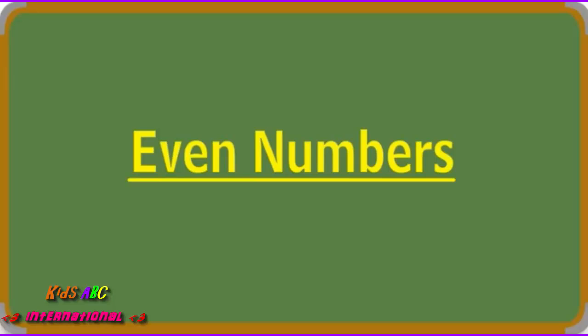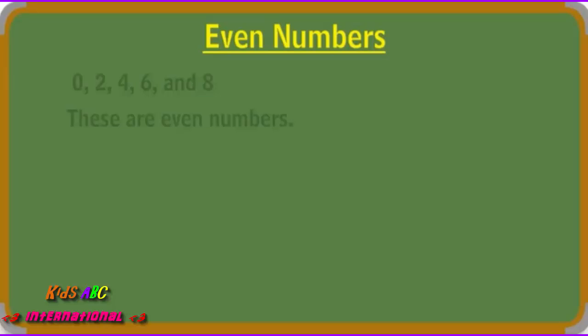When even numbers are divided by 2, there is no remainder. 0, 2, 4, 6, and 8. These are even numbers.